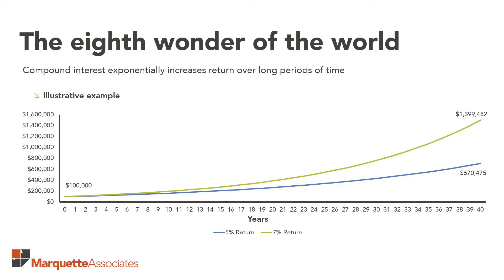It's important to notice that over time, these returns compound. After 40 years, a 5% annual growth would result in a portfolio value of about $670,000. However, a 7% annual return equates to a portfolio value of almost $1.4 million, which is 110% larger than the $670,000.